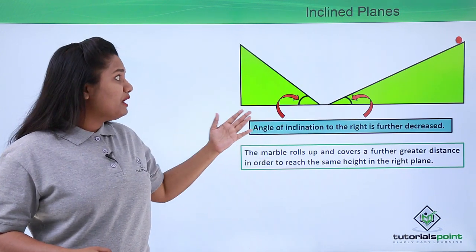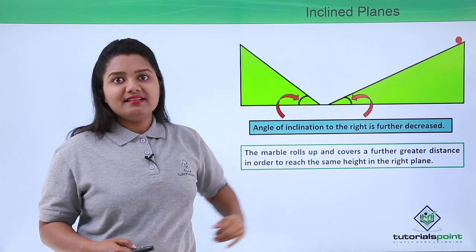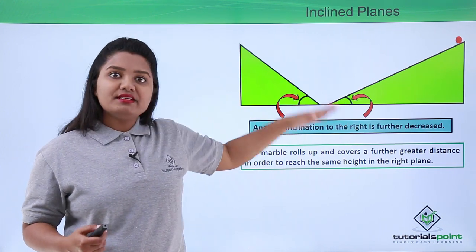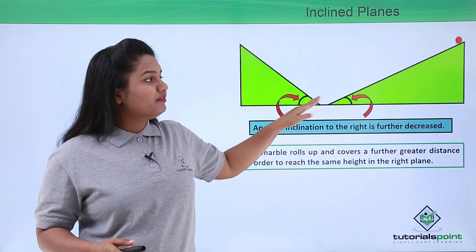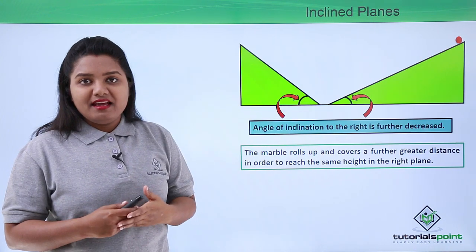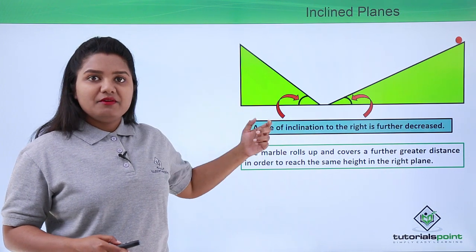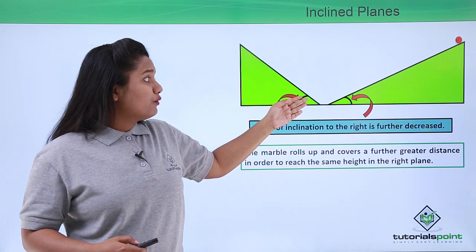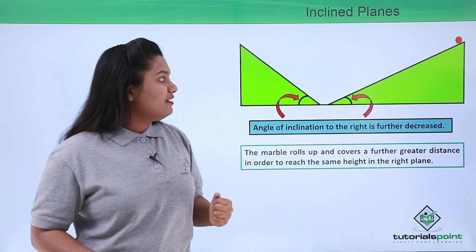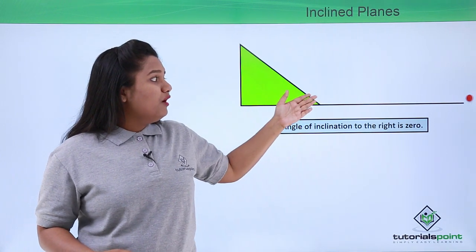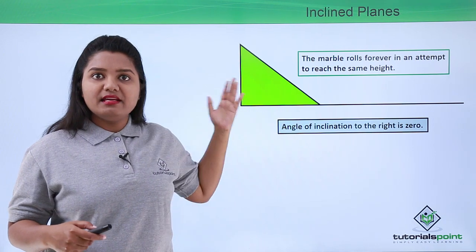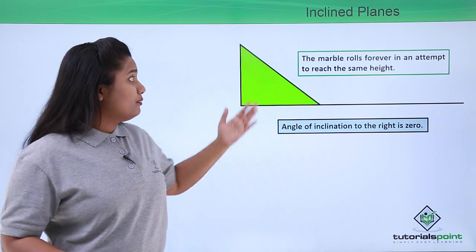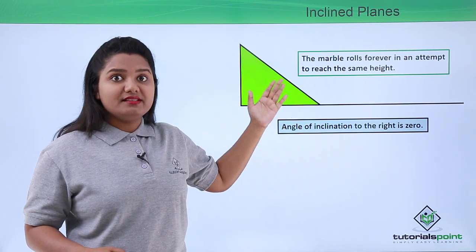If we keep decreasing the angle on the right-hand side, we would eventually make it zero — reducing the slope to horizontal. In that case, the marble rolls down the first plane as usual but would roll on the second plane forever, because no matter how long it rolls it would never reach the same height from which it was initially released.